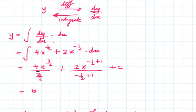So 4 times 2 is 8, this will multiply over here: 8/3 x raised to 3/2 plus, -1/2 plus 1 is 1/2, and that will multiply to give 4x raised to 1/2 plus c. So that's how you get your value of y.